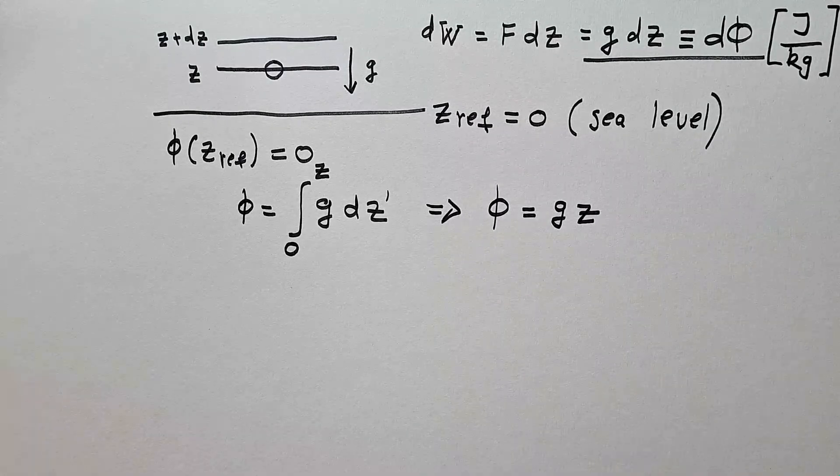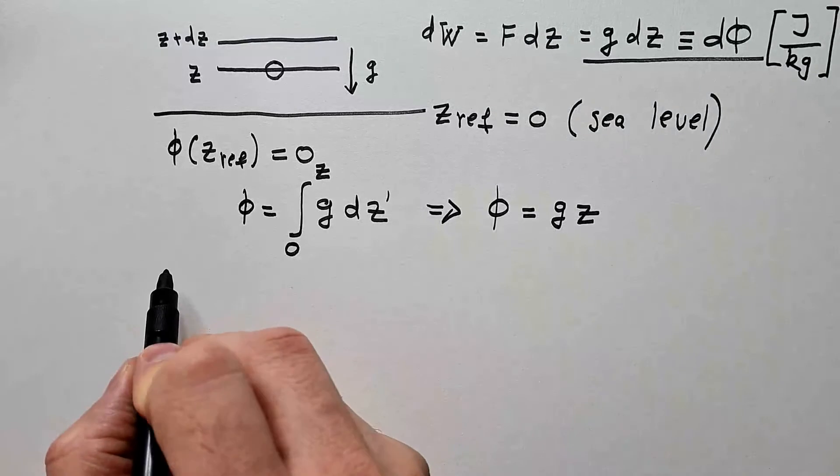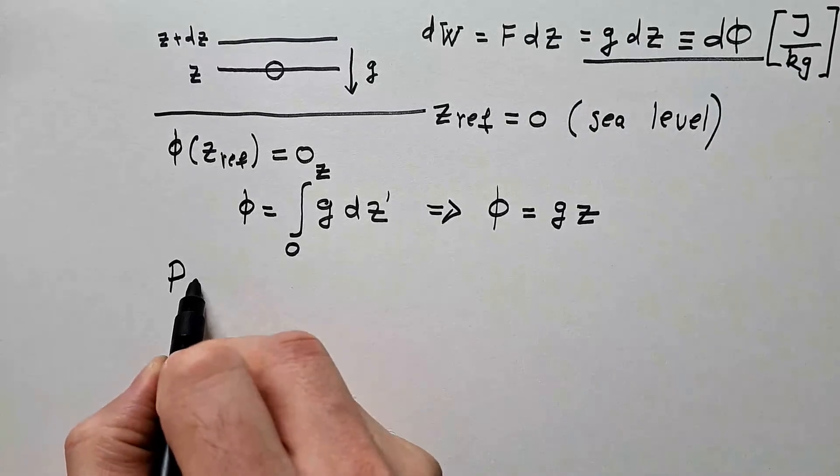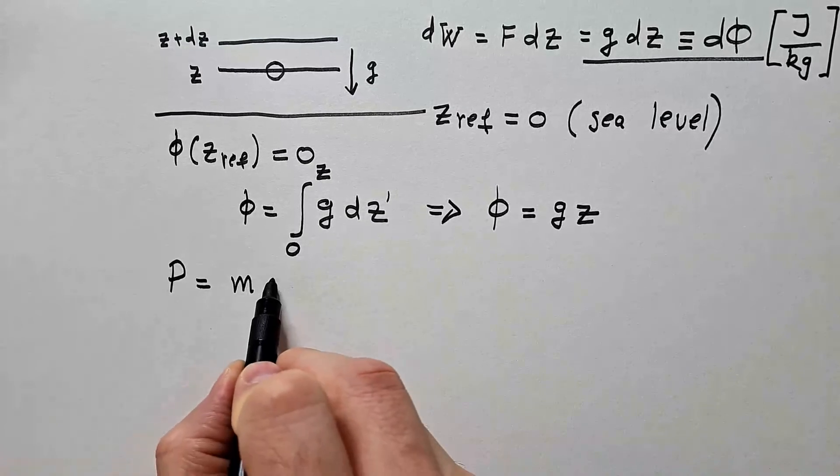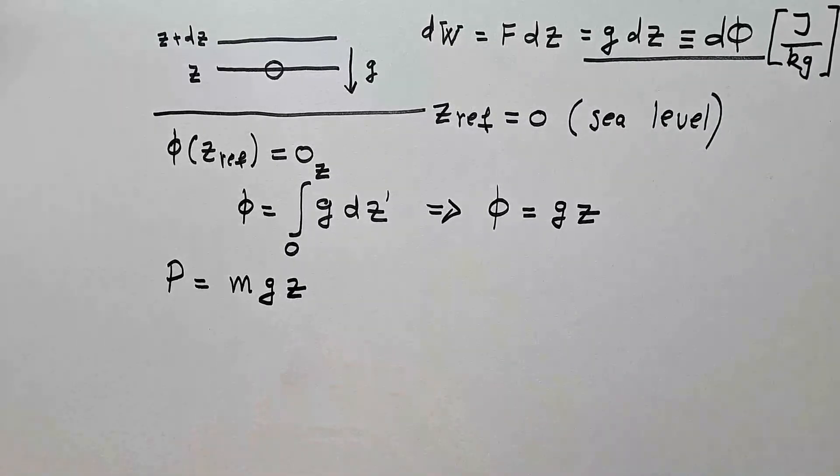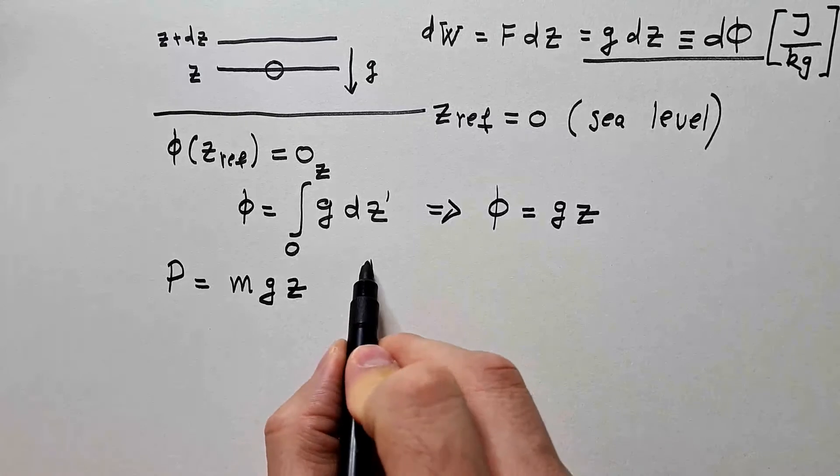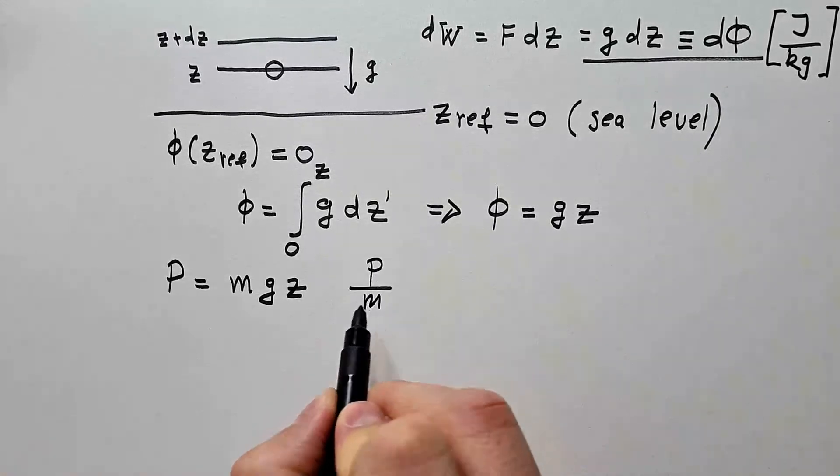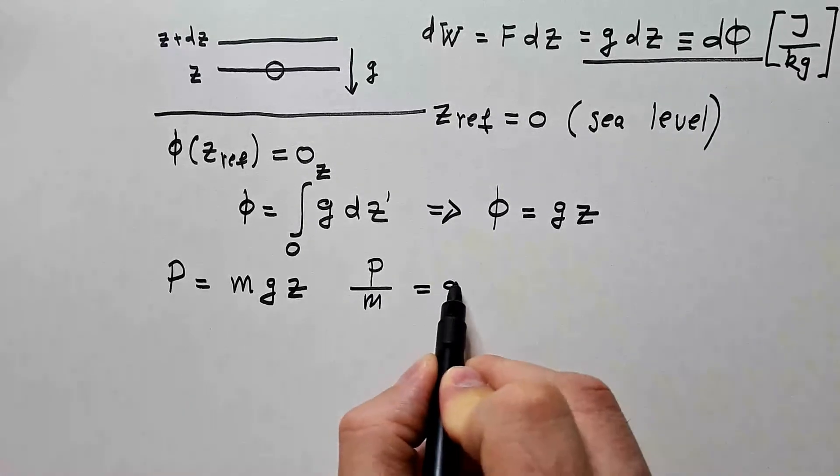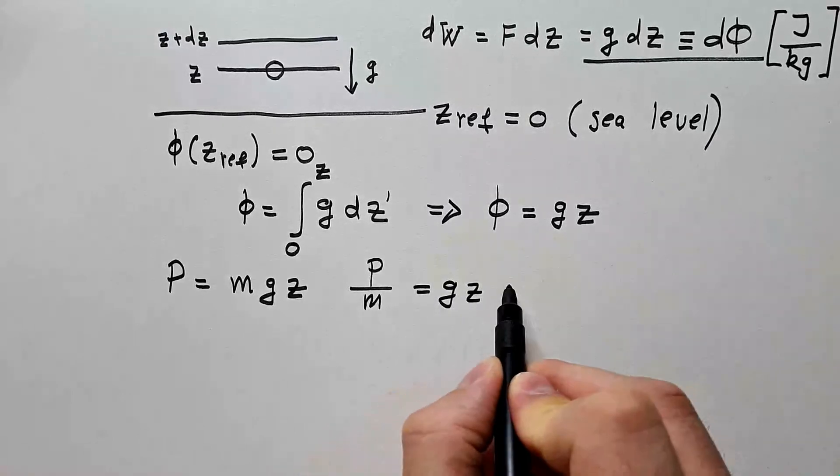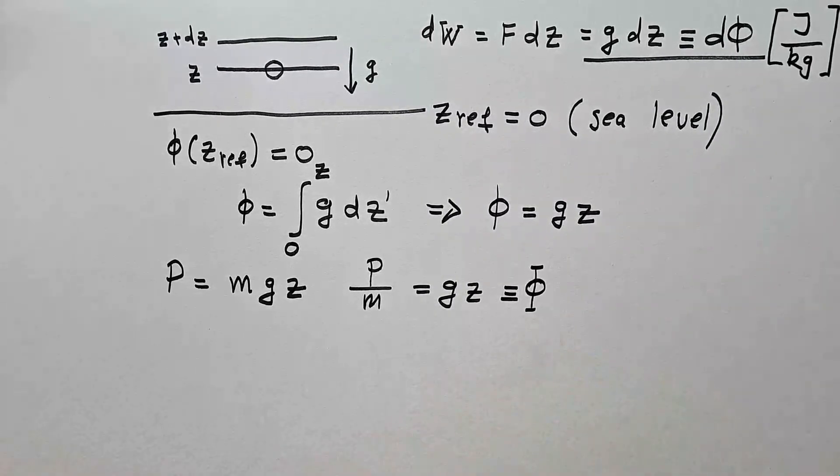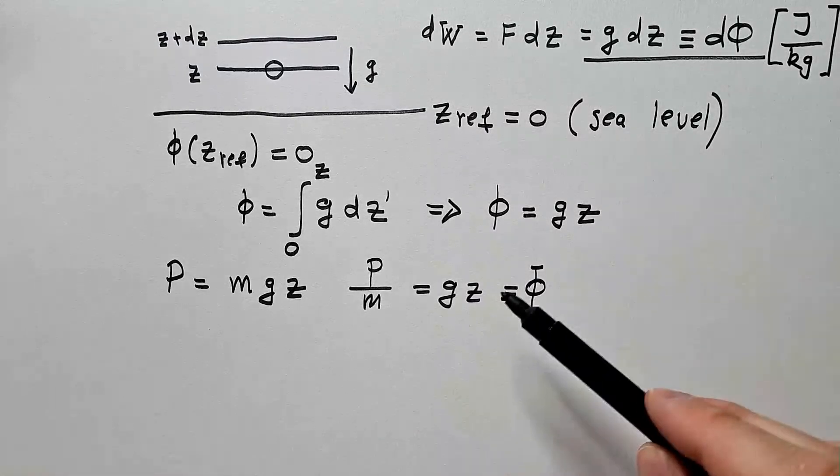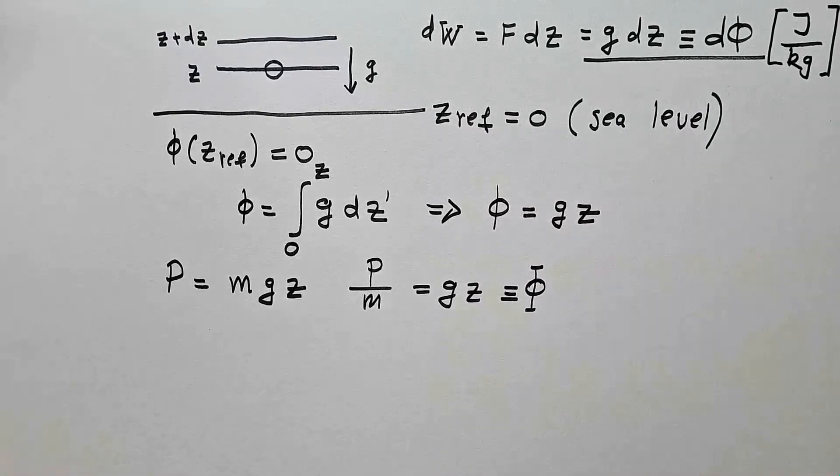Another way to do this thing is to simply say that potential energy of a parcel of air is m g z at some height z. And then, potential energy per mass is g z, and that is, again, by definition, geopotential phi. So these are two alternative ways to get the same result.